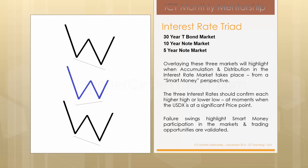When that failure swing happens, we're seeing an interest rate shift — a shift in the marketplace. If this occurs at a moment when you're identifying a potential institutional order reference point in the US dollar index, that confirms that particular idea. For instance, if you're looking for a buy at a bullish order block or support on the dollar index, you would see a higher high on two of the interest rates but a lower high on one of them. That would confirm the bullish order block for the dollar index.